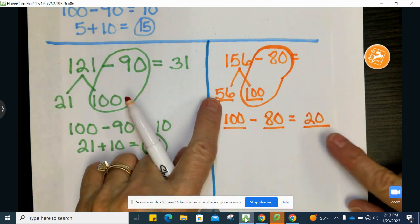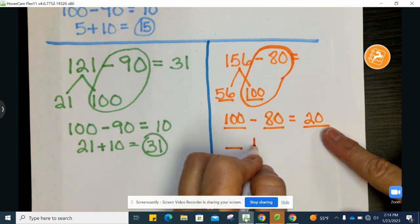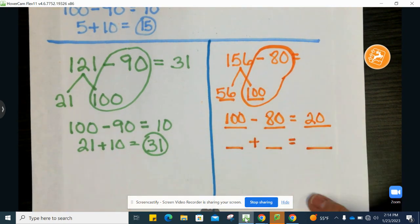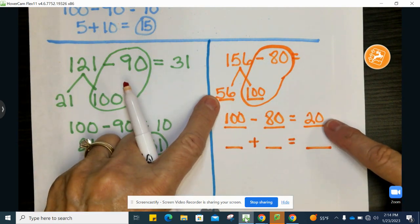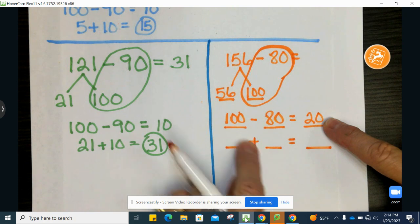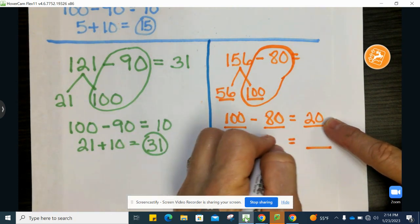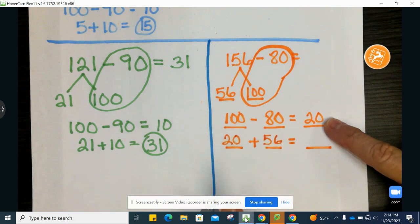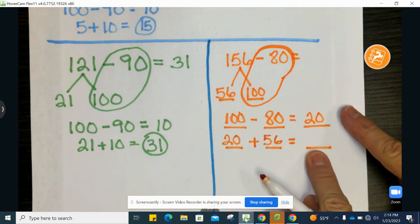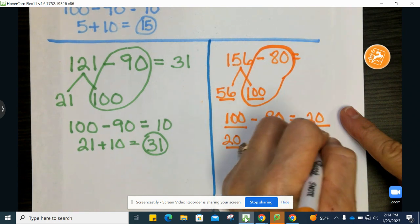Last step is to put these two parts back together. So again, the last step is to put these two numbers back together by adding them. And you will write 20 plus 56. And your answer goes here. And that is 76.